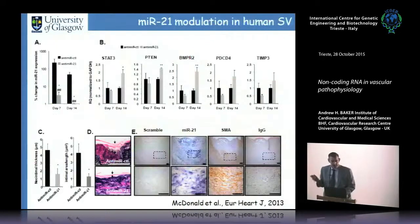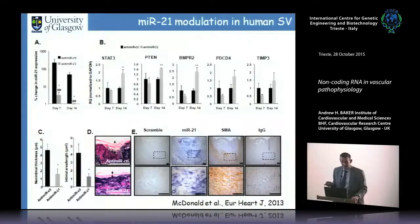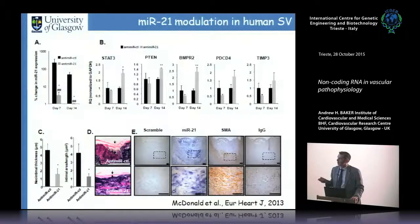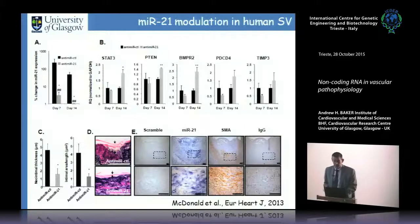In human saphenous vein we can downregulate miR-21 using anti-mirs in collaboration with Miragen. We get some target derepression and can block neointima formation in failed human vein grafts explanted post-mortem. miR-21 is found in active lesions in those grafts, suggesting it's a really good target in vein graft remodeling.